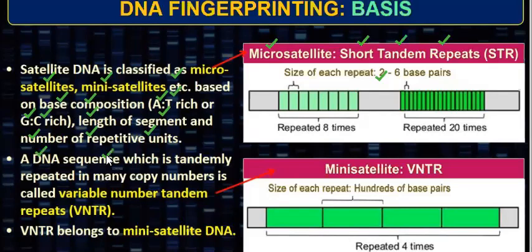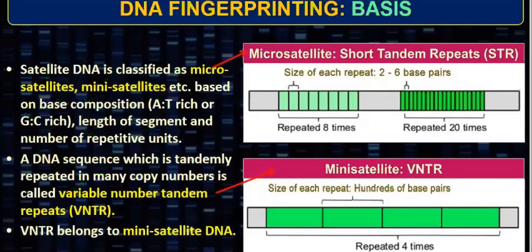Next, a DNA sequence which is tandemly repeated in many copy numbers is called Variable Number Tandem Repeats — VNTR — also called mini satellite. Hundreds of base pairs are being repeated, but the number of repetitions is fewer. We call them Variable Number Tandem Repeats. So micro satellites are repeated 6 to 20 times, and mini satellites are repeated around 100 times. This sequence repeats again and again, and we call it Variable Number Tandem Repeats.